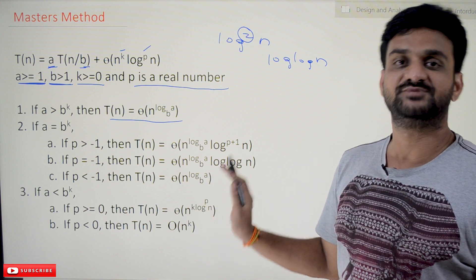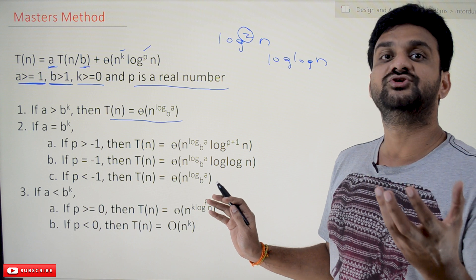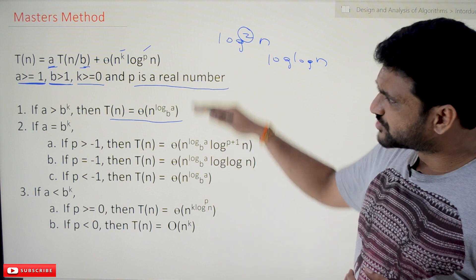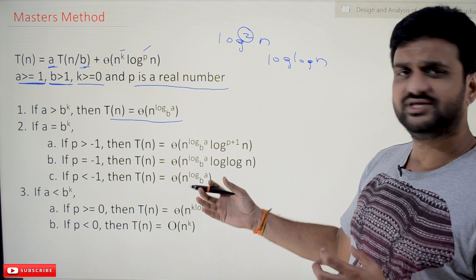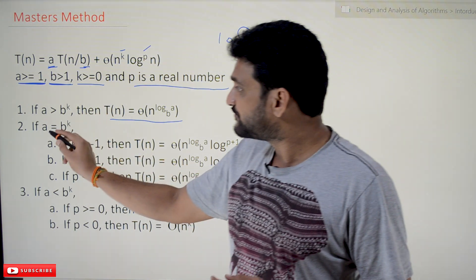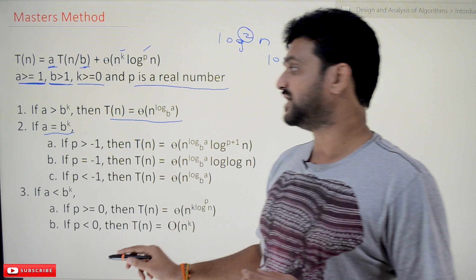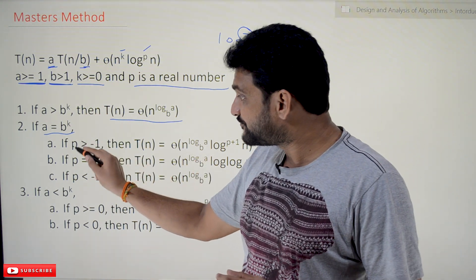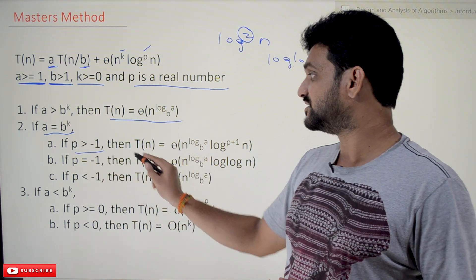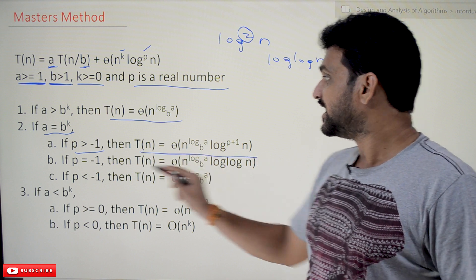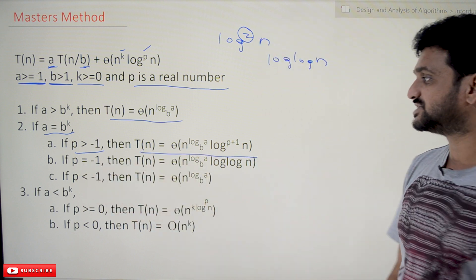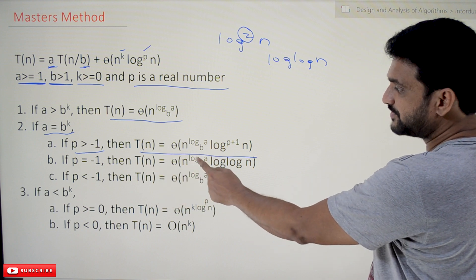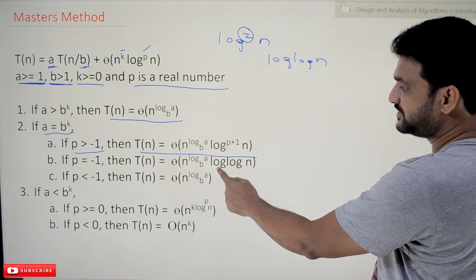With those problems you will easily understand what we are discussing in this class. If a is equal to b^k, and if p is greater than minus 1, then we use the corresponding equation. If p is equal to minus 1, then T(n) is equal to Θ(n^(log_b a) · log(log n)).